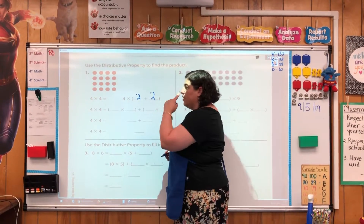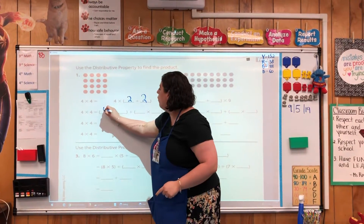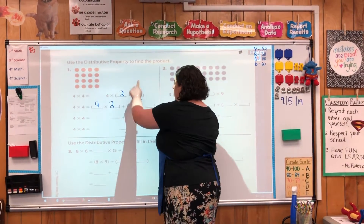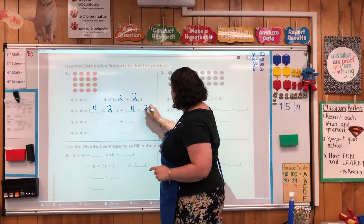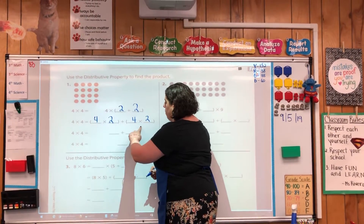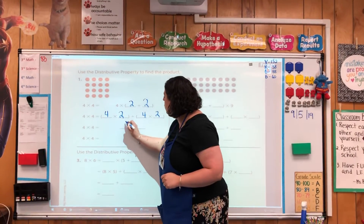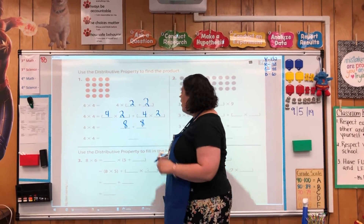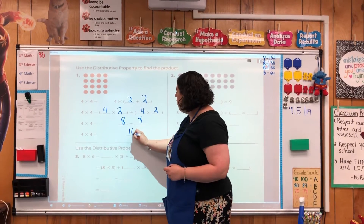After that, using the distributive property, I'm going to multiply 4 times 2 over on this side and 4 times the other 2 over on this side. Each of these blanks corresponds to the multiplication basic fact that's above it. So 4 times 2 would be 8, and 4 times 2 would be 8. The last step would be to add them — that would give me 16.